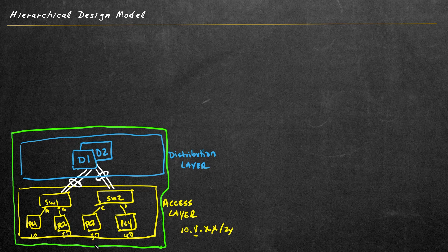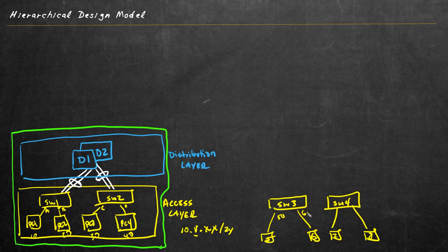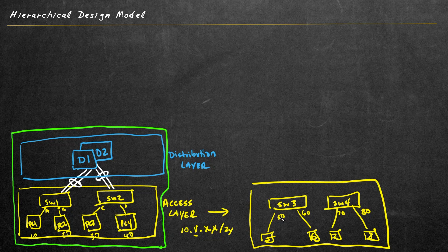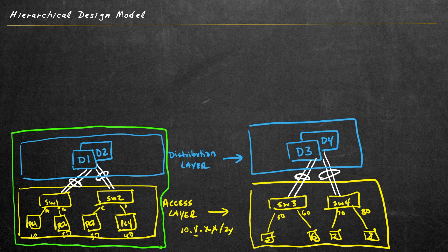Let's imagine everything in green represents one building on a campus, and there's more than just one building. We repeat the process for building two: access layer switches Switch Three and Switch Four, with devices PC5, PC6, PC7, and PC8, using VLANs 50, 60, 70, and 80. Just like in the first building, we also need distribution layer switches D3 and D4 with fault-tolerant cabling. So for the second building, that's their distribution layer. Between these two locations, we have high-speed connectivity — fiber or copper — not going over a slower wide area network.